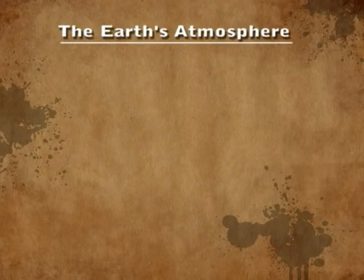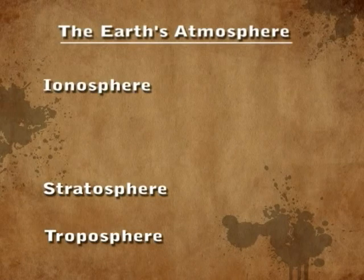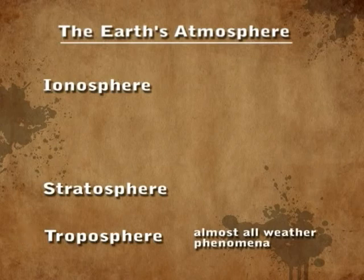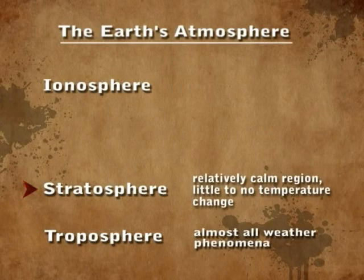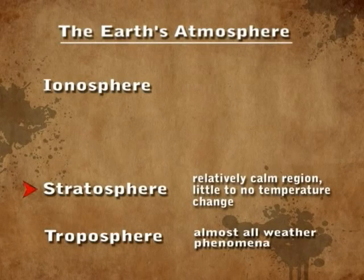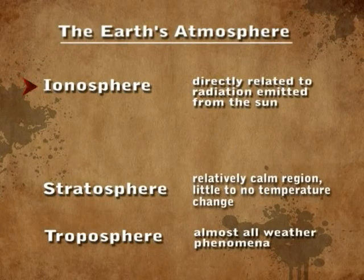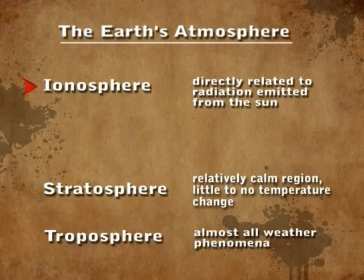The Earth's atmosphere is divided into three separate regions, or layers: the troposphere, the stratosphere, and the ionosphere. Almost all weather phenomena take place in the troposphere. The conditions in the troposphere have a profound effect on the propagation of radio waves. The stratosphere is located between the troposphere and the ionosphere. Because it's a relatively calm region with little or no temperature change, the stratosphere has almost no effect on radio waves. The ionosphere is the most important region for long-distance point-to-point communications. Because the ionosphere is directly related to radiation emitted from the Sun, movement of the Earth about the Sun, or changes in the Sun's activity, will result in variations in the ionosphere.